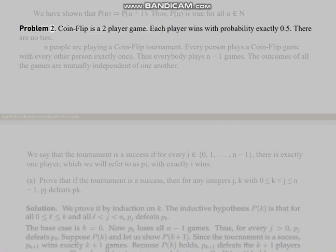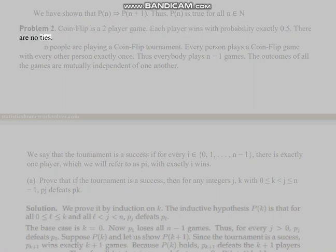Problem 2: Coin-flip is a 2-player game. Each player wins with probability exactly 0.5. There are no ties. N people are playing a coin-flip tournament. Every person plays a coin-flip game with every other person exactly once. Thus everybody plays N minus 1 games. The outcomes of all the games are mutually independent of one another.